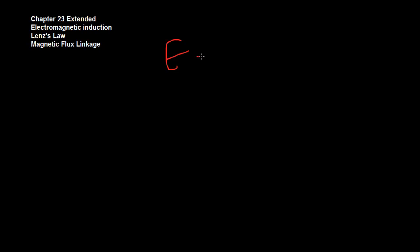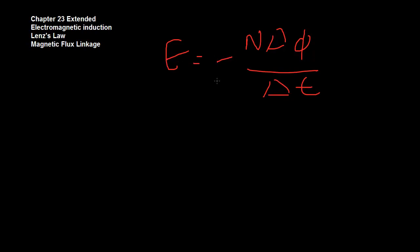Lenz's Law states that the EMF induced is equal to negative number of coils times change in magnetic flux linkage over change in time. What you've got here is this interesting negative sign. I didn't really explain what this negative sign meant in the last video, and a lot of people don't understand what it means. It's a really difficult concept to grasp, because these are scalar quantities. Whereas with simple harmonic motion, for example, you could see that acceleration was always in the negative direction of velocity, so that negative sign makes sense, because those are vector quantities.